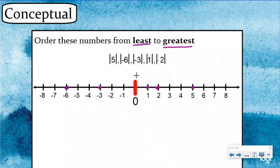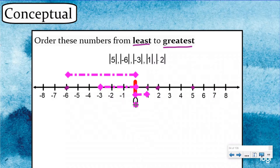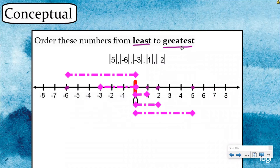If I start at zero and go to negative six, that would be right there. If I start at zero and go to negative three, it'd be right there. If I start at zero and go to one, it would be right there. If I start at zero and go to two — I'm showing the absolute value because I'm showing how far they are away from zero. And if I go from zero to five, my line would be about right there. When we're comparing the absolute value, let's compare the lines to see which is smallest to longest — least to greatest.